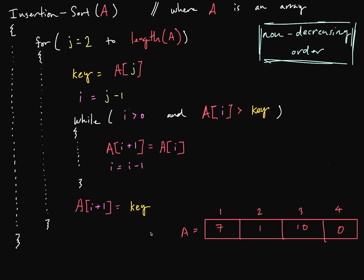Here we have the pseudocode for this algorithm. There are a couple things to point out before we start. For one, we're sorting this array of elements into non-decreasing order. Secondly, our indices in this example start from 1. Those of us who come from a programming background typically start from index 0, so don't let this throw you off. In books about algorithms, they try to be as general as possible and typically start from index 1.